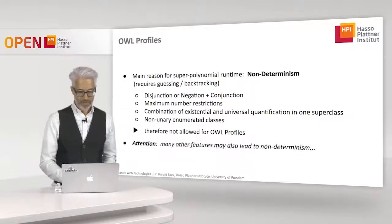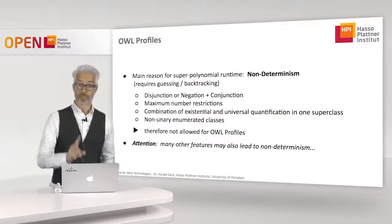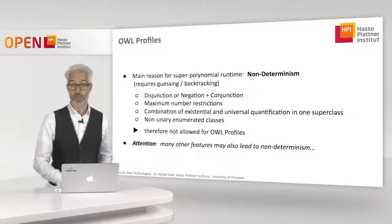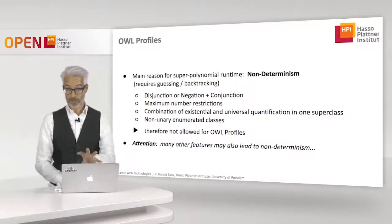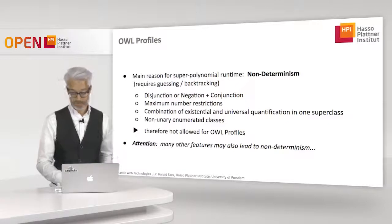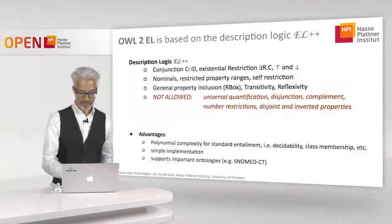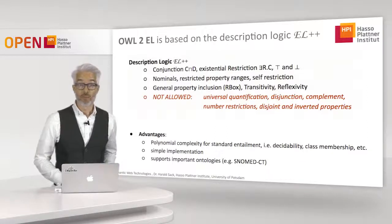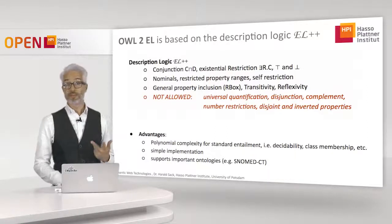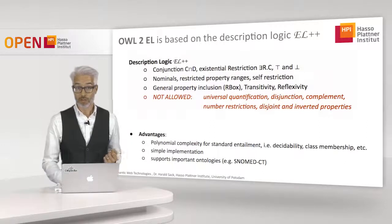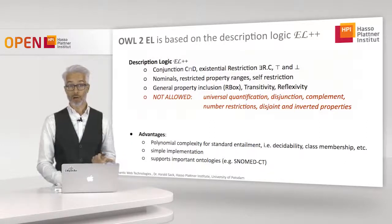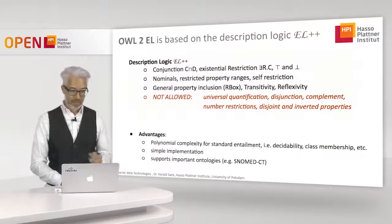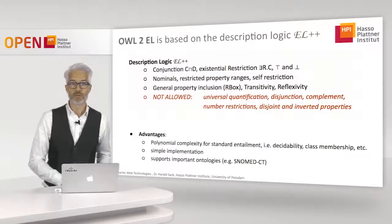Keep in mind there are many other features which may also cause non-determinism — these are not the only ones. There are three specific OWL profiles: OWL 2 EL, OWL 2 RL, and OWL 2 QL. We start with OWL 2 EL.